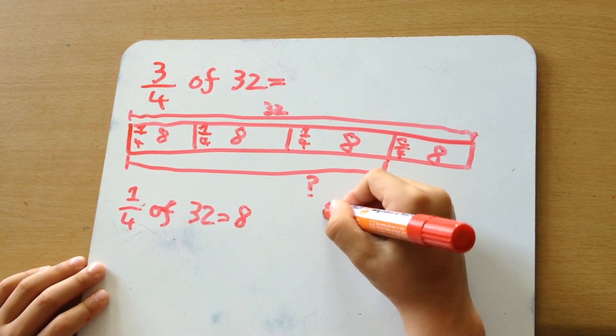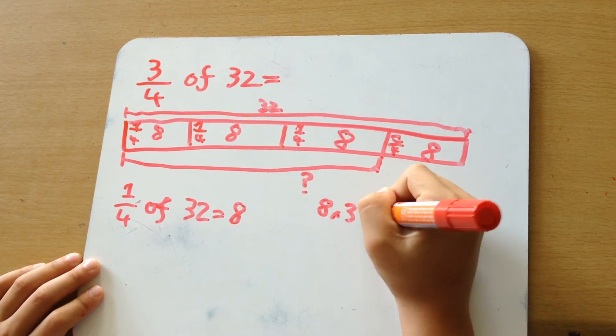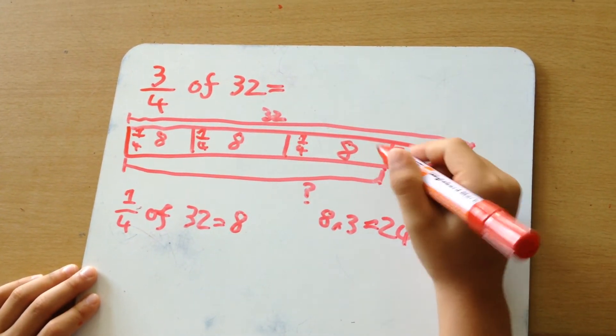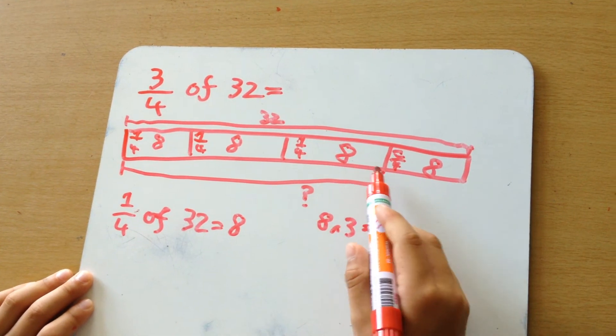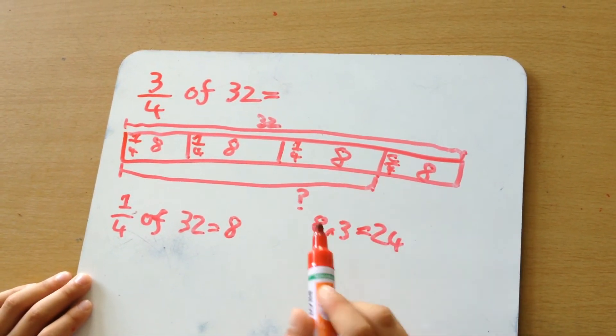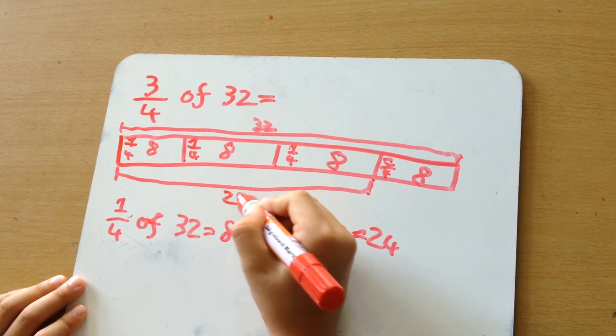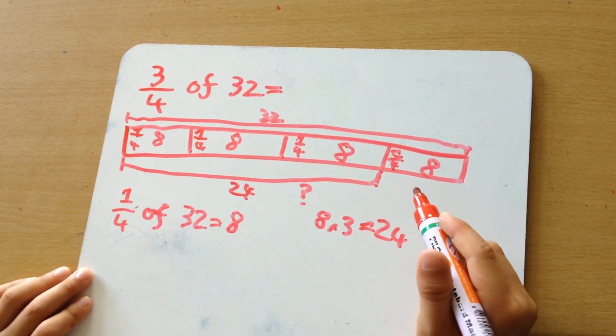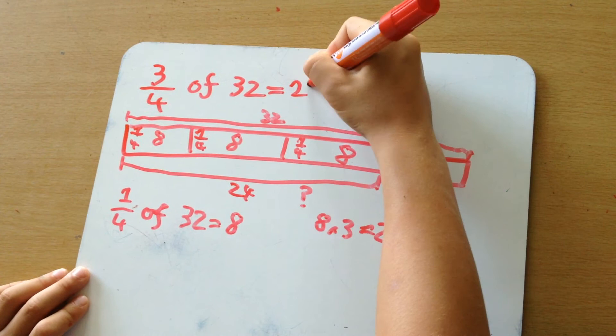And eight times three equals twenty-four. So now we found out the amount of three blocks. And the amount is twenty-four. So three-fourths of 32 is twenty-four.